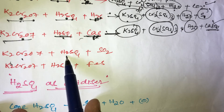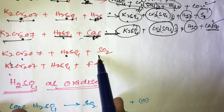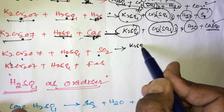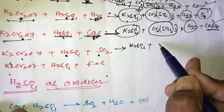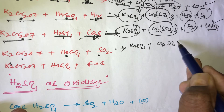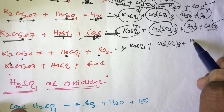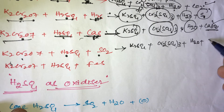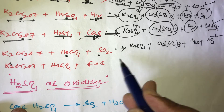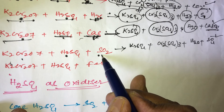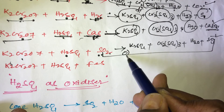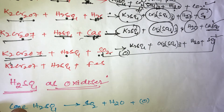Next: K2Cr2O7 plus H2SO4 plus sulphur dioxide (SO2). The fixed products are K2SO4 plus Cr2(SO4)3 plus water. Sulphur dioxide on oxidation with K2Cr2O7 is converted into sulphate (SO4²⁻).